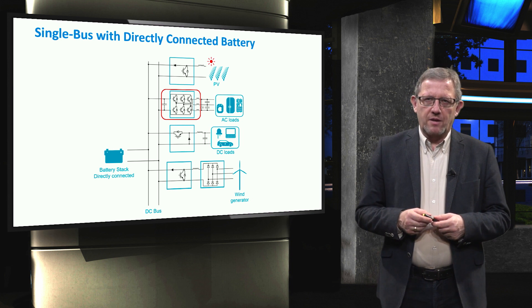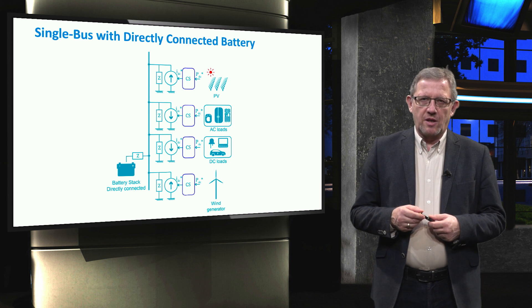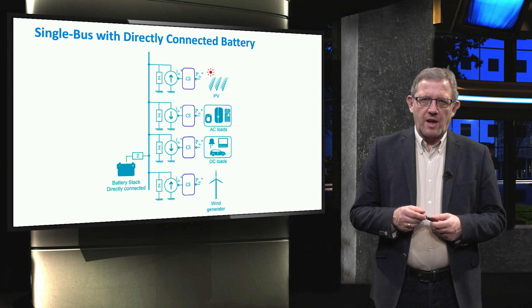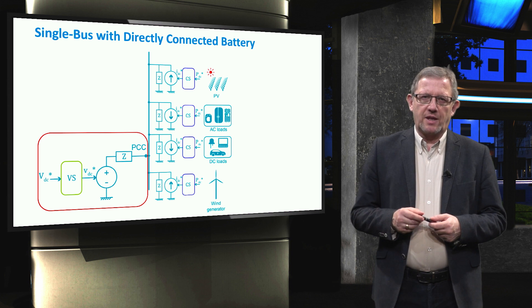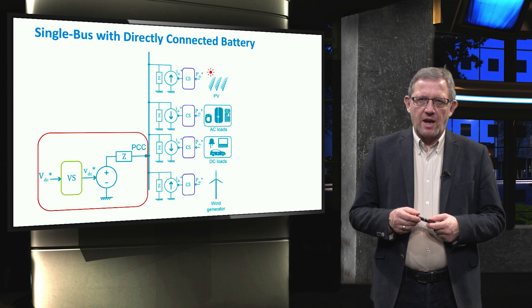Which element is grid forming — guarding the DC bus voltage — and which element is grid feeding? The grid forming and grid feeding representation of the same single bus with directly connected battery is shown in this slide. The battery is seen as a large capacitor, represented as a grid forming voltage source in series with an impedance. Other renewable sources like photovoltaic solar and wind, which have limited control over their input sources, are modeled as grid feeding current source-based units in parallel with an impedance. Both DC and AC loads can also be modeled as grid feeding. In this representation, the DC link voltage is set according to the state of charge of the battery, which is related to the open circuit voltage of the battery stack.